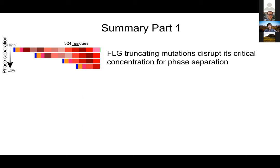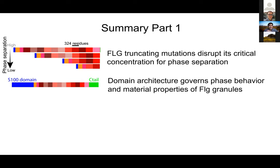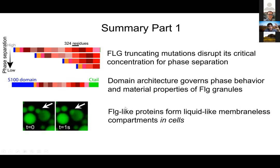Just to summarize this first part: based on these studies, we are confident that the truncating mutations seen in humans are likely speaking through drastic changes in the critical concentration for phase separation. The architecture of these proteins — both the S100 domain and the tail domain — are likely governing specific material properties, including the stiffness of the granules, tuned to accomplish biological function. In vitro cell culture experiments suggest these granules do appear to have the liquid-like behaviors we were excited about.